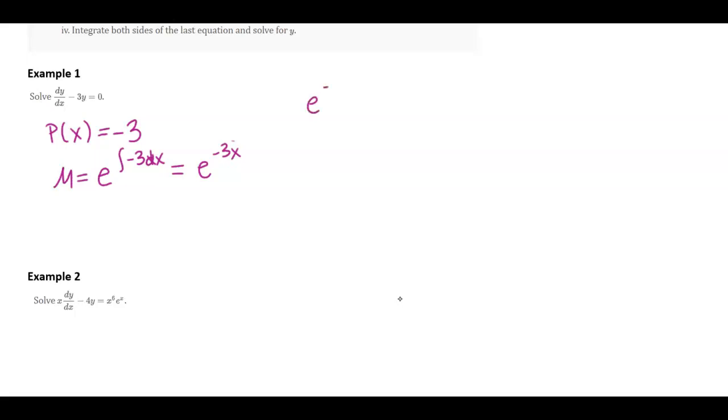If I multiply through everything by that mu, then what you should see here is if this was mu times just y, and I said take the derivative of that, we would get first derivative of the second, plus derivative of the first times the second. So it makes sense that this piece is the derivative of this product.